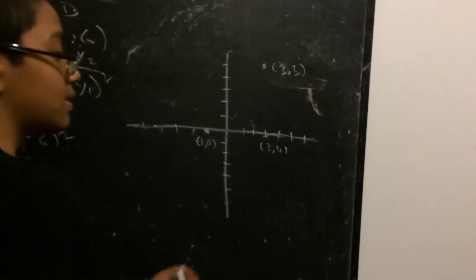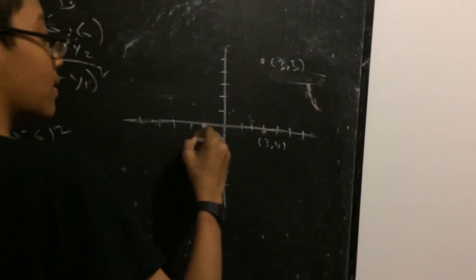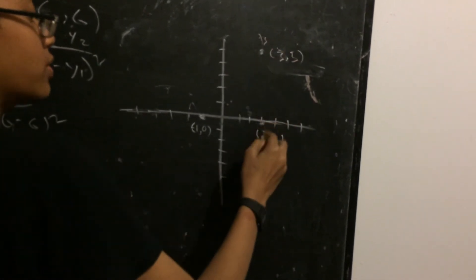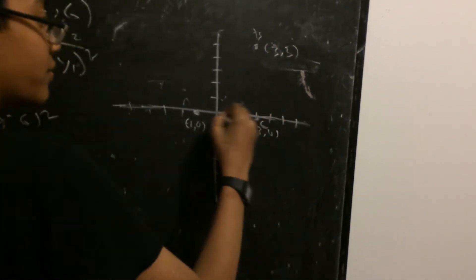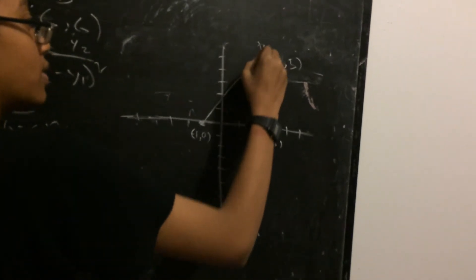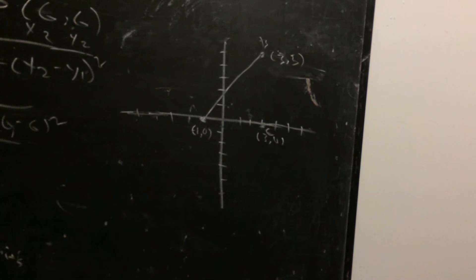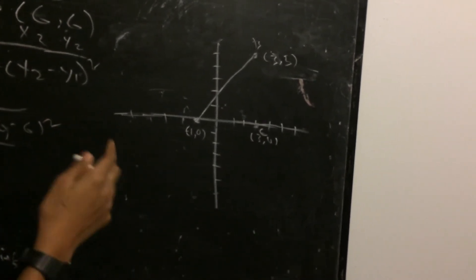So if we want to find the distance between, let's say, this point A, this is point B and this is point C. If we wanted to find the distance between point A to B, we could use the same thing, the distance formula.